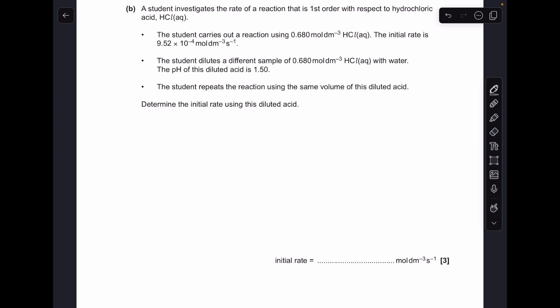Moving on to part B. So the students carried out two experiments, two reactions of this HCl, and measured the initial rate. So we know the starting concentration for the first experiment of the HCl, and then we're given some information about its pH for the second experiment.